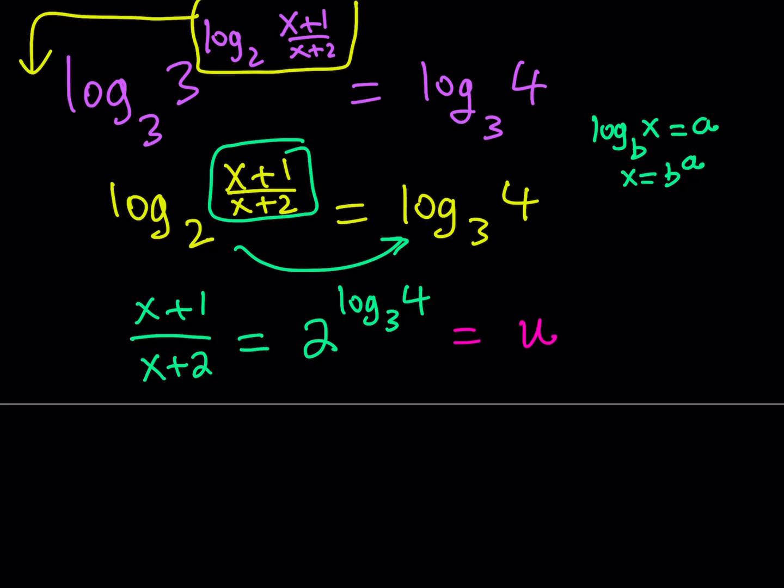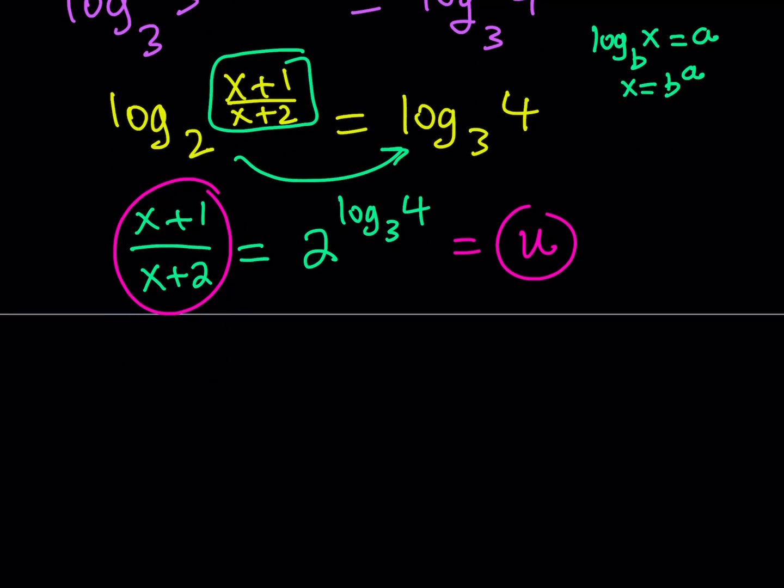So let me go ahead and call this expression u. Now what am I getting from here? At the end I'm going to back substitute. So let's go ahead and just focus on this one and this one. So what happens if x plus 1 over x plus 2 is equal to u? Then our goal here is to solve for x. So let's go ahead and do it. So you can start by cross-multiplying.